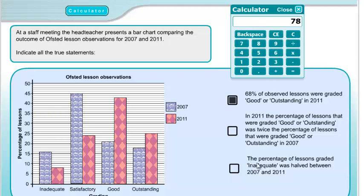Statement 3: The percentage of lessons graded inadequate was halved between 2007 and 2011. Inadequate in 2007 was 16%, and in 2011 it was 8%. So 16 reduced by half to 8 — that is a true statement.